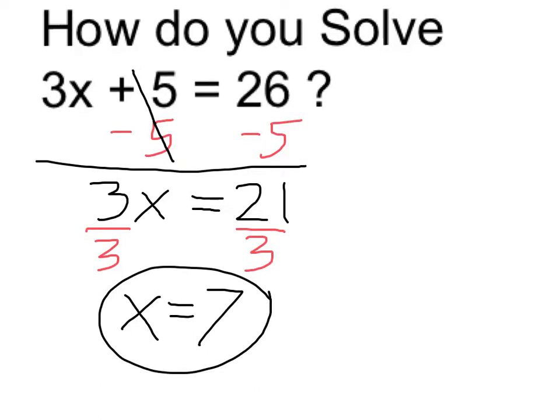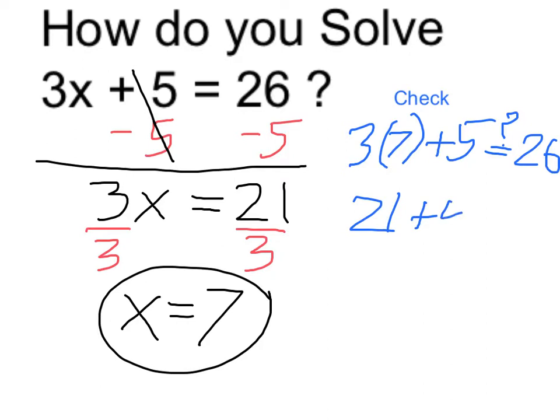I'm proposing 7 as my answer. Now I can check this by putting the 7 into my original equation and seeing if it is in fact true. 3 times 7 is 21. And yes, 21 plus 5 is going to equal 26. So I can see it is in fact true and that my solution is x equals 7.